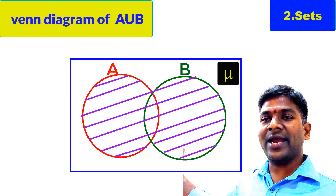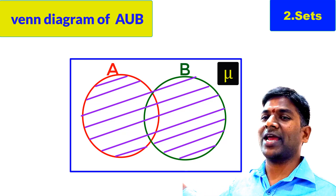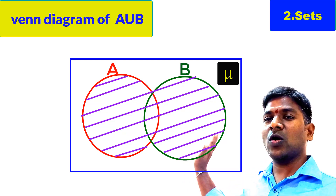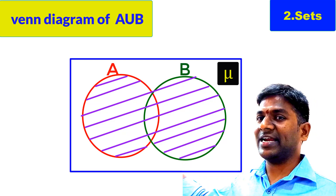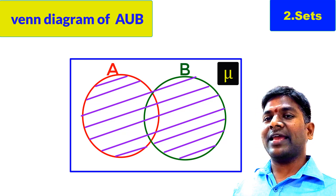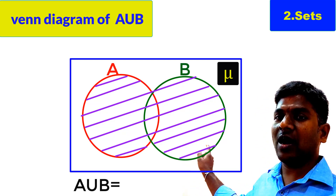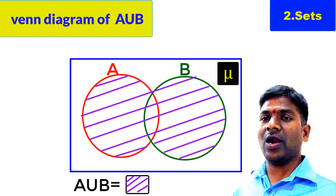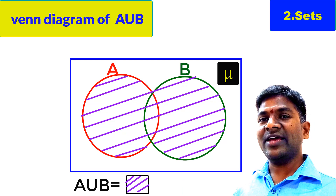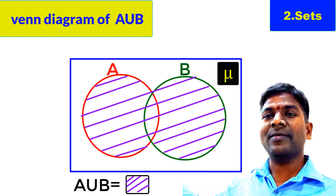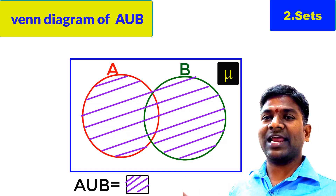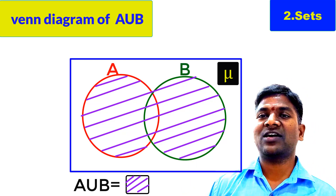The shaded region on the screen is the A union B. The elements in this shaded region are the elements belonging to A union B — all the elements of A and B. So the total A and B sets are shaded here. We write A union B is equal to the shaded region, as shown on the screen. Whatever elements are in the shaded region are the elements of A union B. This is the representation of A union B by Venn diagram.